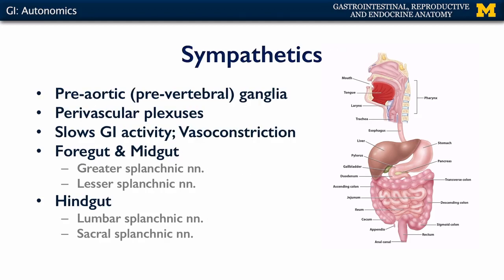The sympathetics are largely organized through pre-aortic or pre-vertebral ganglia, such as the celiac, superior mesenteric, and aorticorenal, or just the aortic plexus.